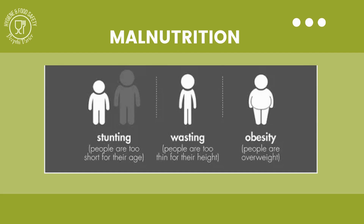To define stunting: when the height for a particular age is below minus 2 standard deviations from the WHO standard, that is called moderate stunting; below minus 3 standard deviations is severe stunting. Stunting has declined steadily since the 2000s, but we have a Sustainable Development Goal to achieve by 2030, and to reach that target we need to move at a faster pace. Overall, stunting has declined over the years.